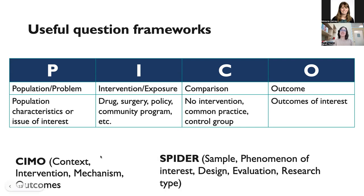There are many other question frameworks out there. SEMO is one that looks at context rather than population, an intervention, the mechanism for how that intervention works in practice, and outcomes of interest. SPIDER is another framework that looks at sample — which could be a population or something unrelated to humans — so if you're working in a field that's not human-focused, this might be a good framework to consider. It also covers phenomenon of interest, design or evaluation, and research type.